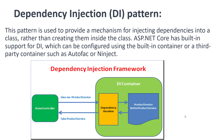First, I want to define the Dependency Injection pattern. This pattern is used to provide a mechanism for injecting dependencies into a class rather than creating them inside the class. ASP.NET Core has built-in support for DI, which can be configured using the built-in container or a third-party container.